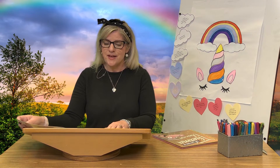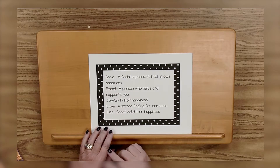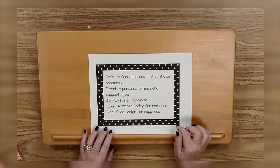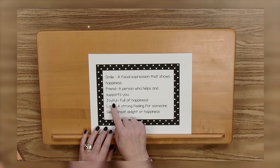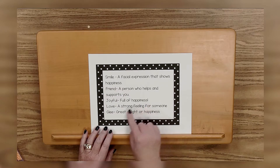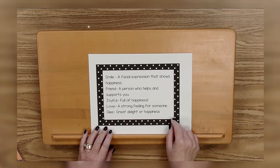The first thing we're going to do is talk about vocabulary words in the book. I love the words in Thelma the Unicorn Returns because it's a happy book all about kindness, love, and joy. The first word is smile — a facial expression that shows happiness. A friend is a person who helps and supports you. Joyful means full of happiness. Love is a strong feeling for someone. And glee is great delight or happiness. When I read today, listen for those words because they're in this book.